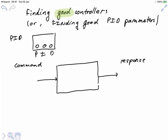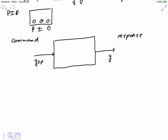the job of the controller is to make the response most closely resemble the command. Using mathematical notation, we call the command YSP and the response Y. That is one version of what it means to be good — goodness tells me how close the response is to the command. If I were to plot this, I would have a graph with time zero on the left-hand side at the origin.